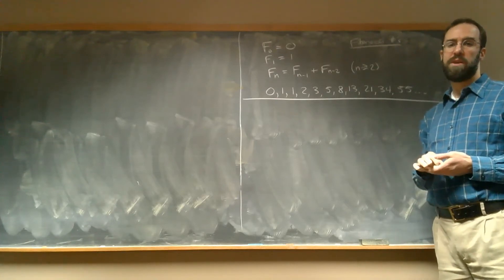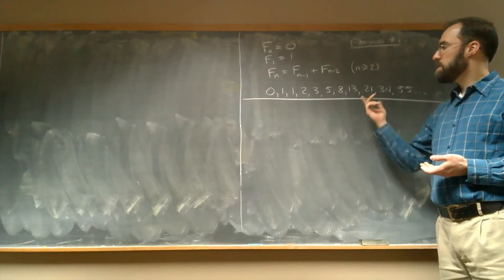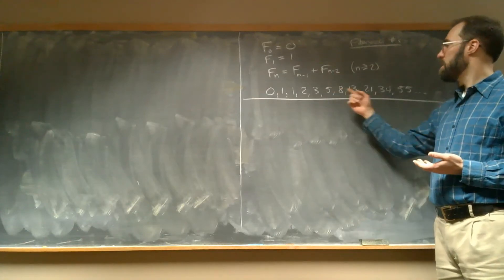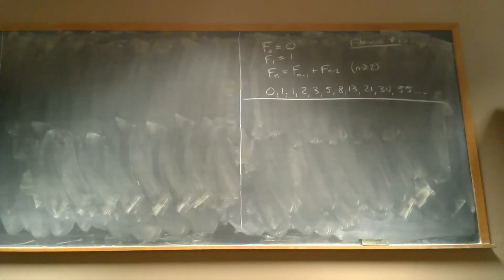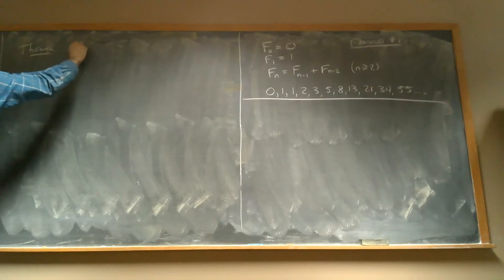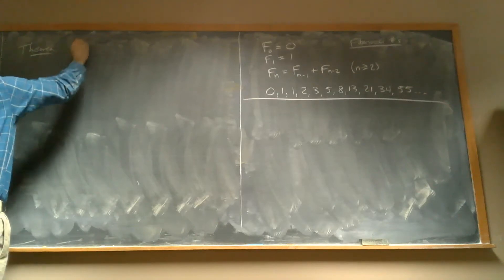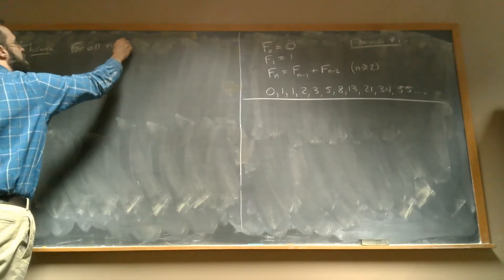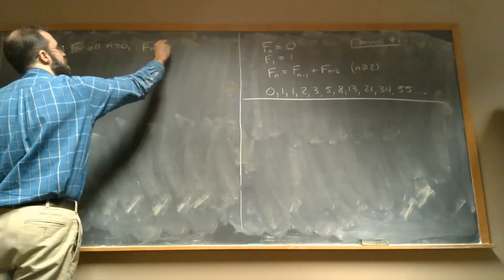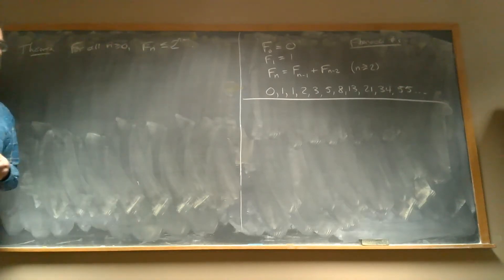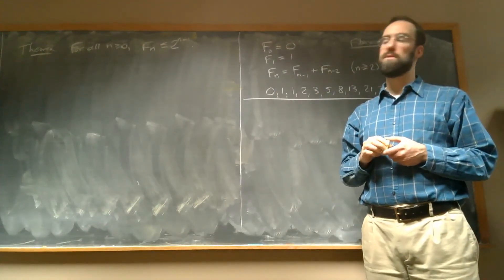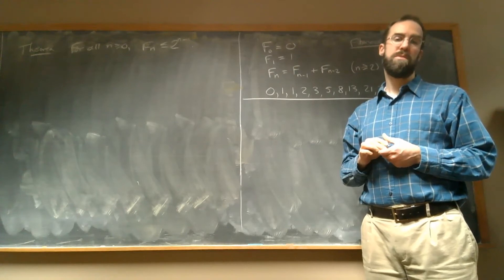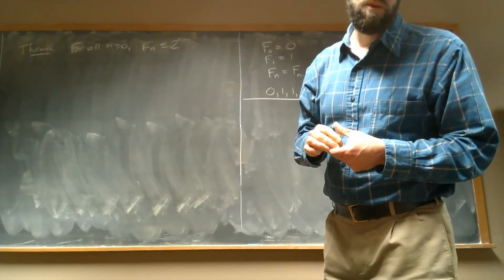You might ask yourself — there are lots of questions you could ask about these numbers, they have an amazing number of patterns. One thing we could ask is how fast do these grow. One simple theorem you can prove is that for all n greater than or equal to zero, F(n) is less than or equal to 2^(n−1). So at least we can say they're not growing quite as fast as an exponential function with base two.